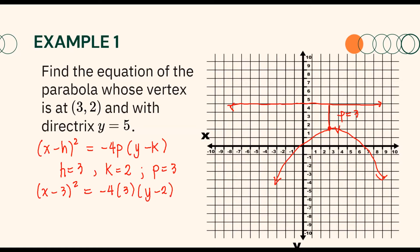Simplifying negative 4 times 3, we will have (x minus 3)² equals negative 12(y minus 2). This is the equation of the parabola in standard form.